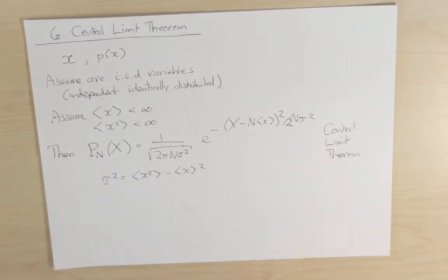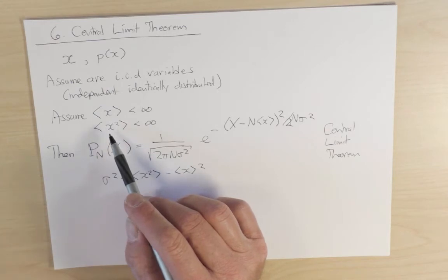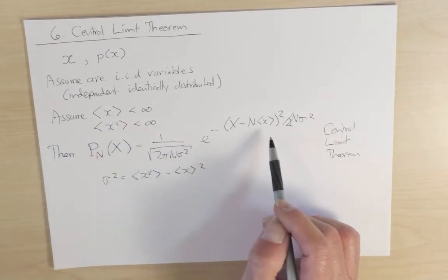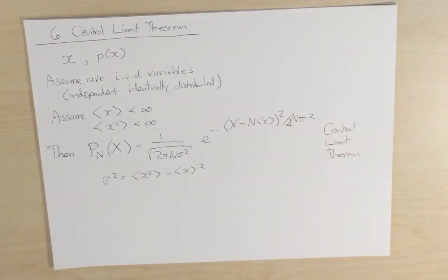This is a very powerful and general result because one needs then only the first two moments of the single step distribution. These are the only things that matter to determine the long-distance, long-time properties of a random walk. So this is an example of a universal statement in which short-range details of the microscopic process, namely the details of the single steps, basically do not matter in the long-time limit.